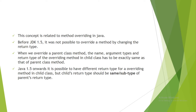That was the rule before JDK 1.5, but from JDK 1.5 onwards the new rule is we can now change the return type. It is now possible to have a different return type for an overriding method in the child class, but the child class return type should be the same as or a subtype of the parent class method's return type.